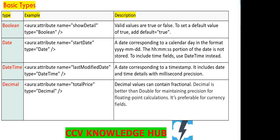Here are the basic types. First one: Boolean. Boolean will support true or false. The default value, if you want to give in the syntax, we can write default equal to true. The syntax is: aura:attribute name equal to 'showDetails', type equal to Boolean, and if you want to show as a default, default equal to true.